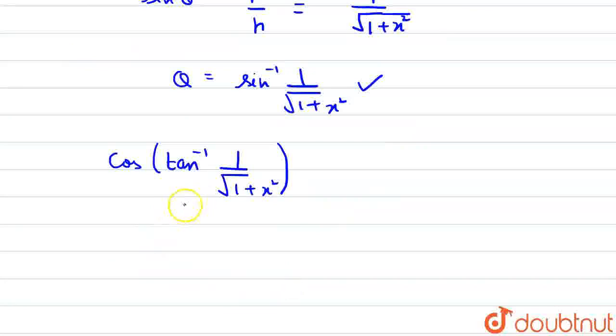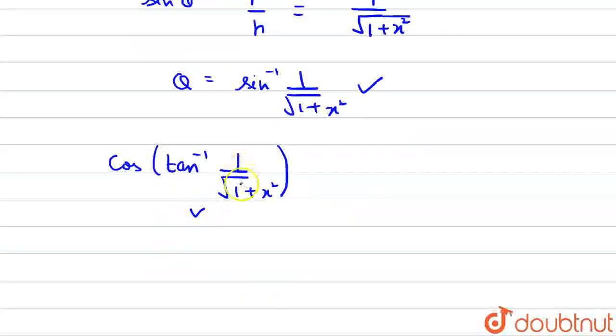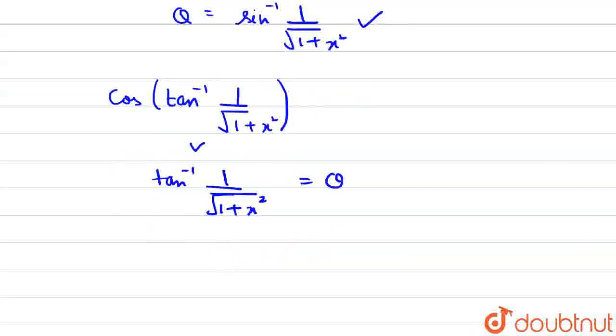Now, again we have to convert tan inverse of 1 upon root of 1 plus x squared into cos inverse. So, now we will take tan inverse of 1 upon root of 1 plus x squared is equal to theta. We will now convert this as 1 upon root of 1 plus x squared is equal to tan theta.